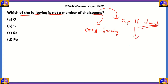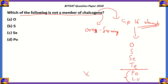Group 16 elements include oxygen, sulfur, selenium, and tellurium. Further down the group you also have polonium and livermorium, but these are not considered chalcogens because they are radioactive and their properties are not well known. Therefore, the option which is radioactive will not be a member of the chalcogens.